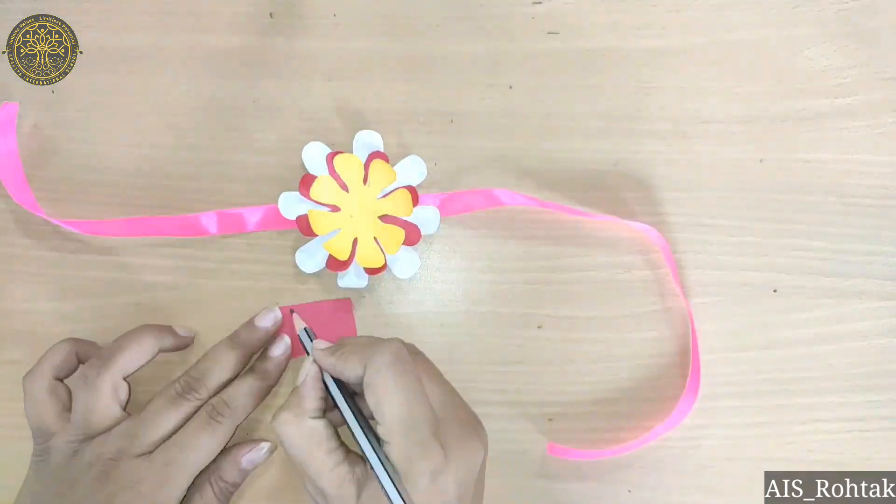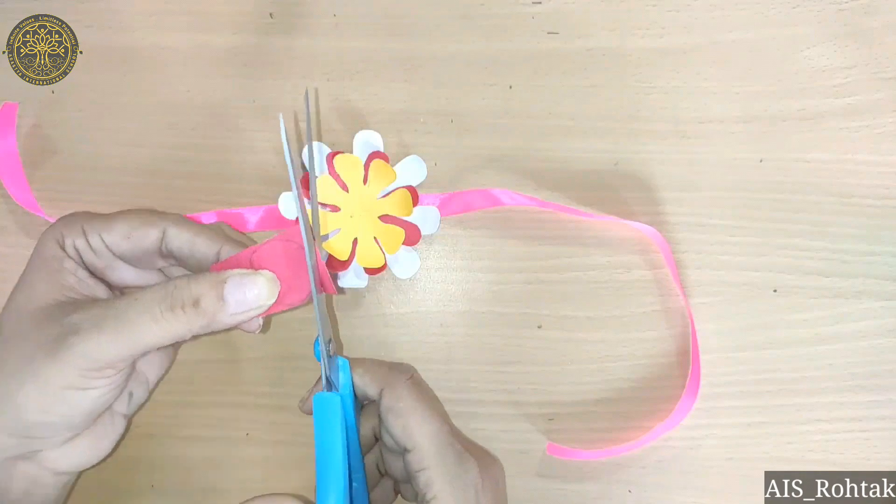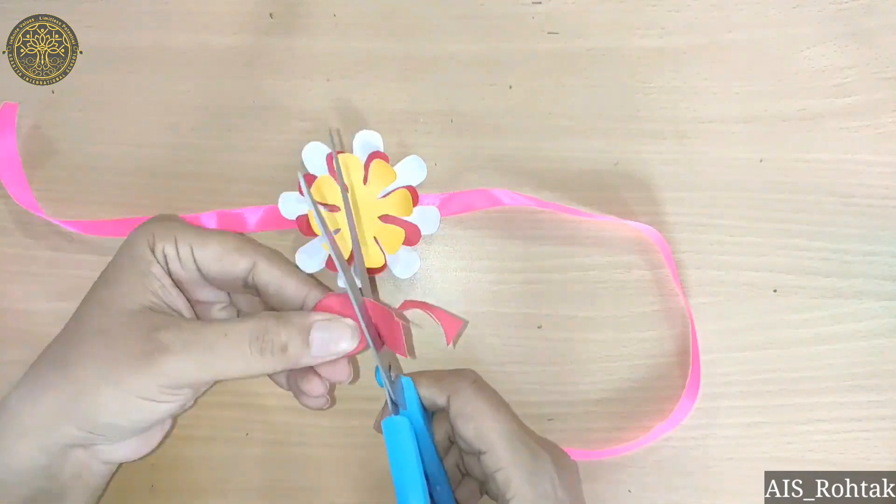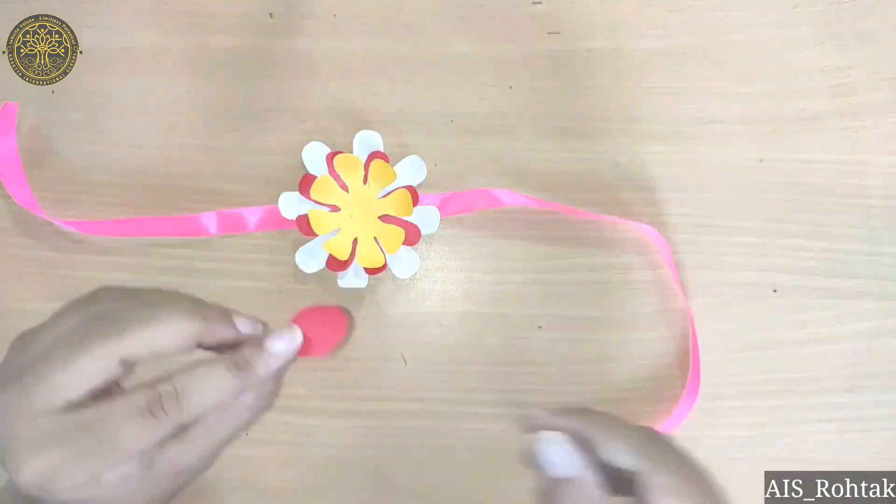Now cut a red color circle shape and we will paste it in the center of the yellow color.